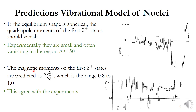The second prediction concerns the magnetic moments of the first 2+ states. These are predicted to be 2Z/A, which falls in the range 0.0 to 1.0 nuclear magnetons. A few exceptions exist, mostly due to closed-shell structure. The experimental results agree well with this prediction.